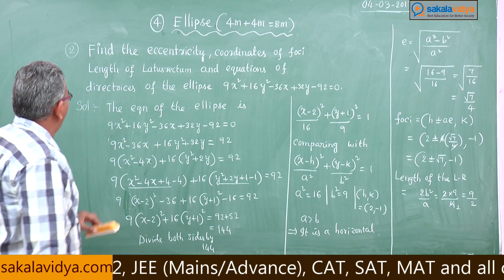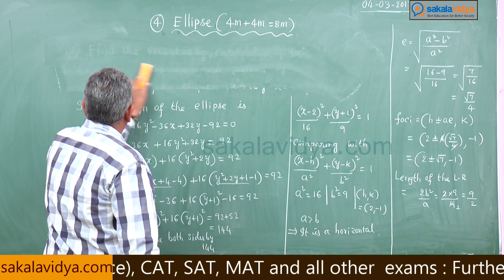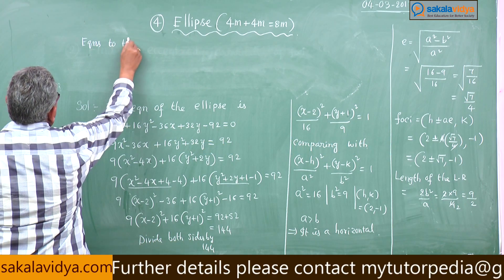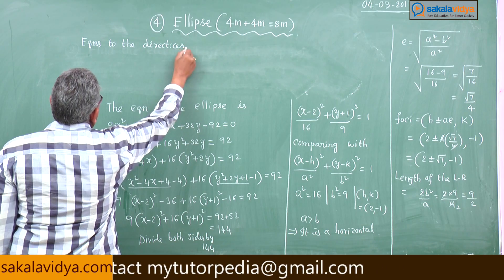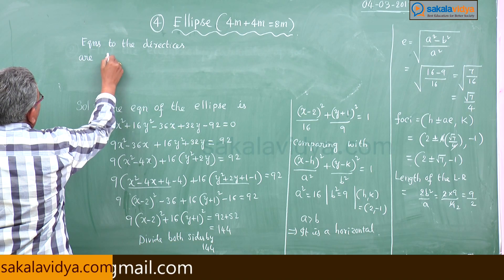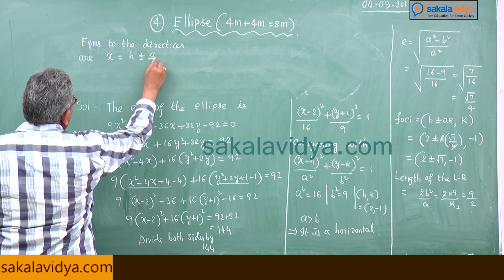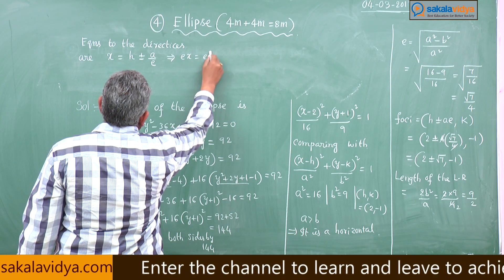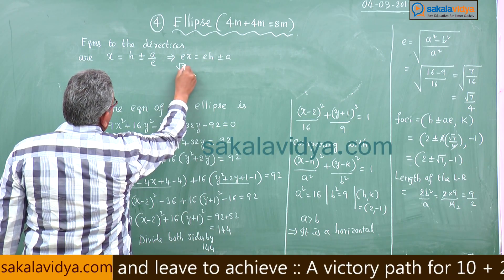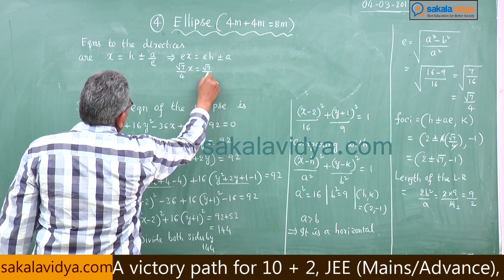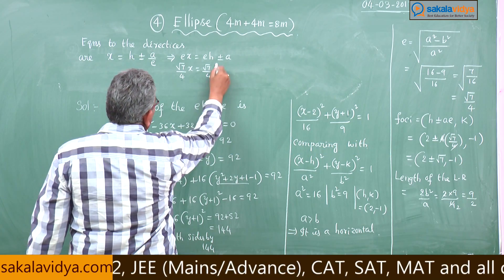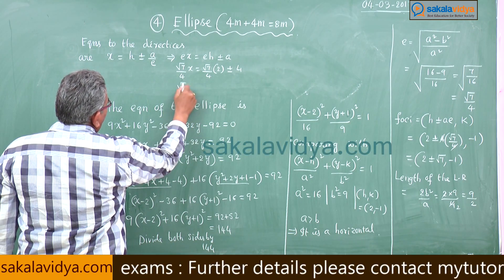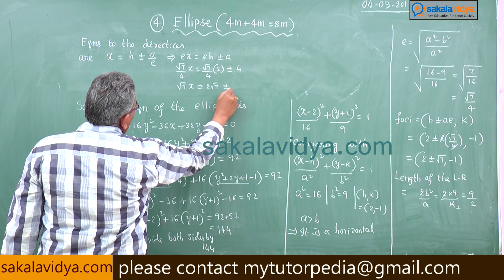Now we find the equations of the directrices. The directrices are x = h ± a/e = h ± a²/(ae). Substituting: x = 2 ± 4/(√7/4) = 2 ± 16/√7. Multiplying through: √7·x = 2√7 ± 16, giving equations √7·x = 2√7 + 16 and √7·x = 2√7 - 16.